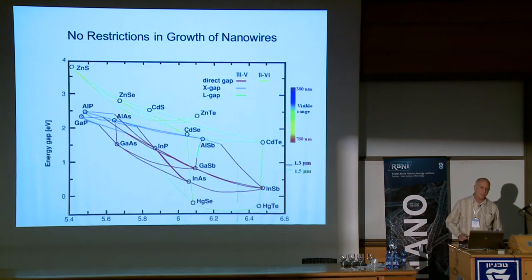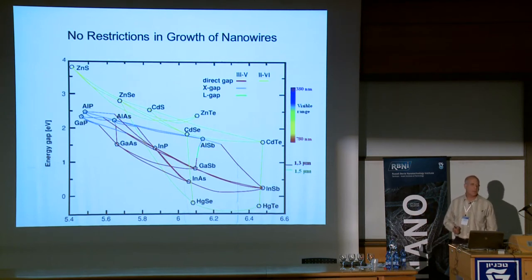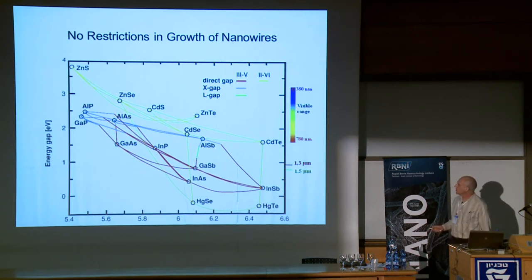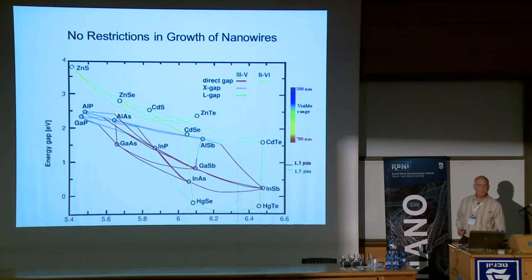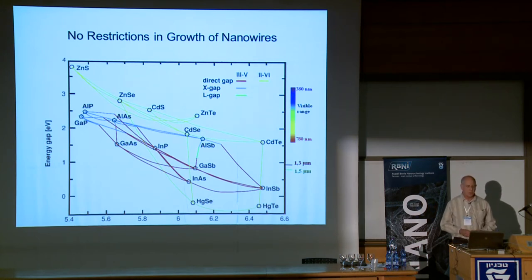But for nanowires, there are no more restrictions. Everything can be grown on everything because the dimensions are so small. The strain in the layers is not sufficient to cause any problems in the growth. So we can choose any substrate and grow any material - that's what's so nice. And we can get actually very large band discontinuities between different layers without having to worry about the substrate material.